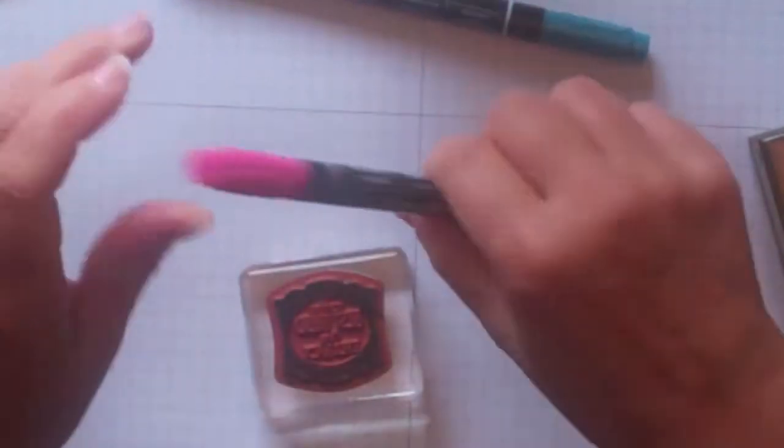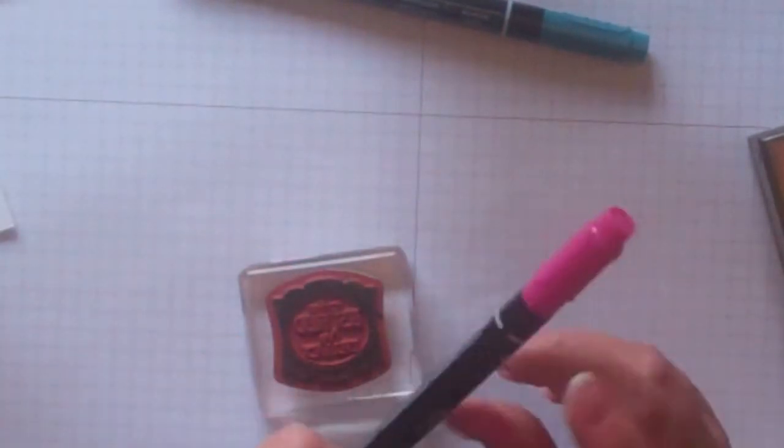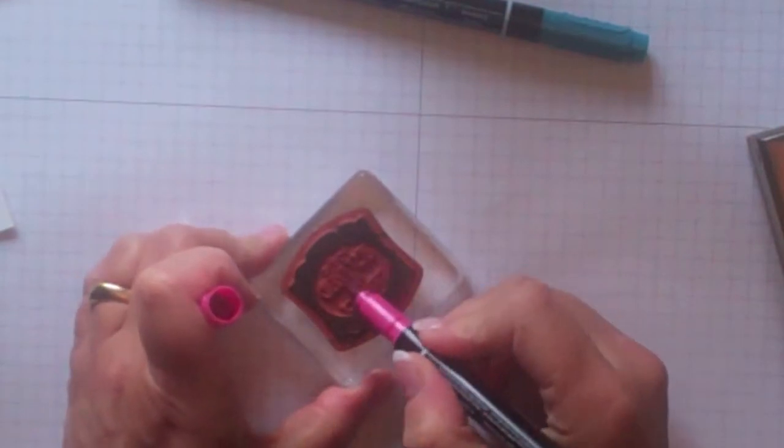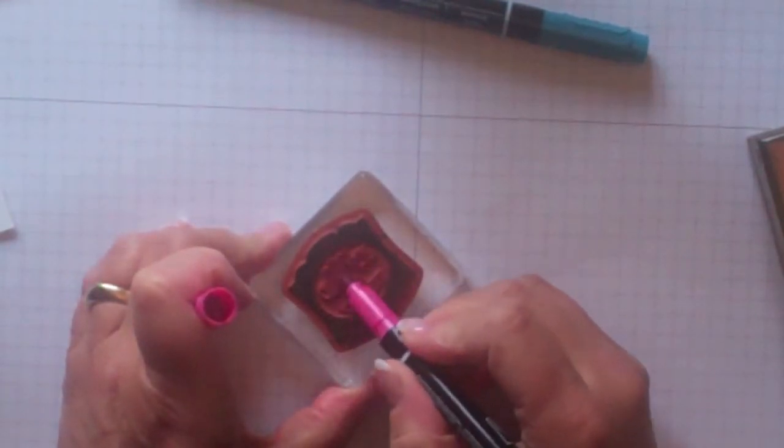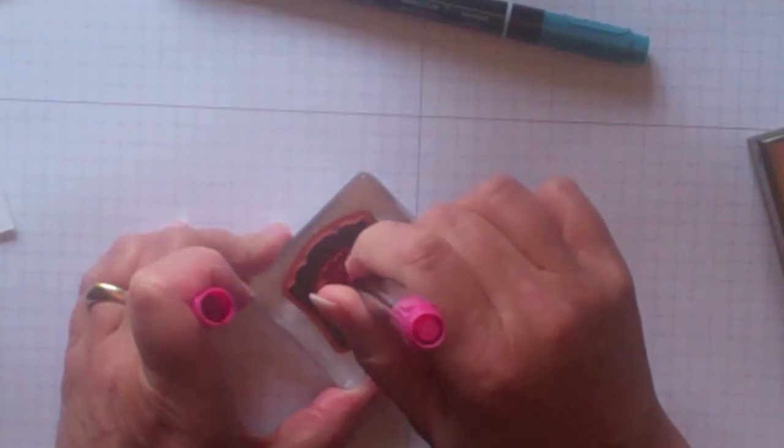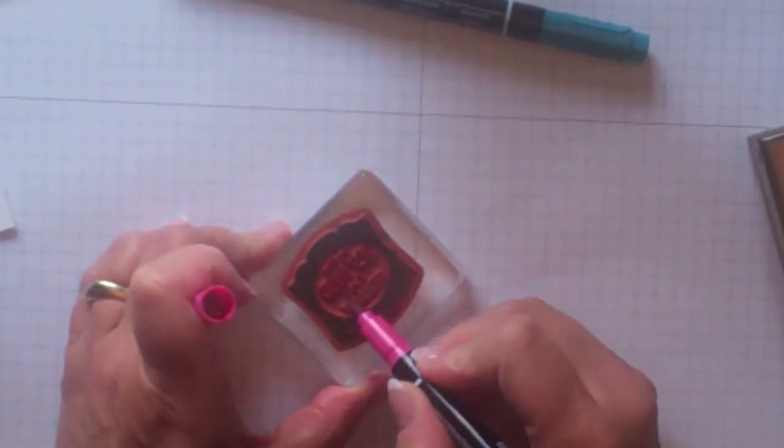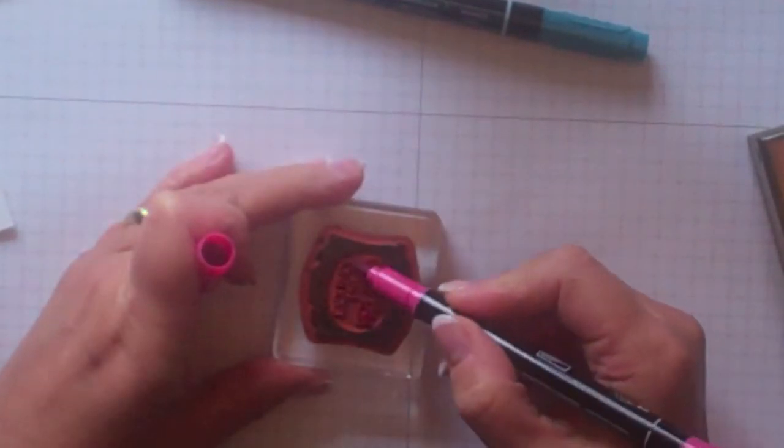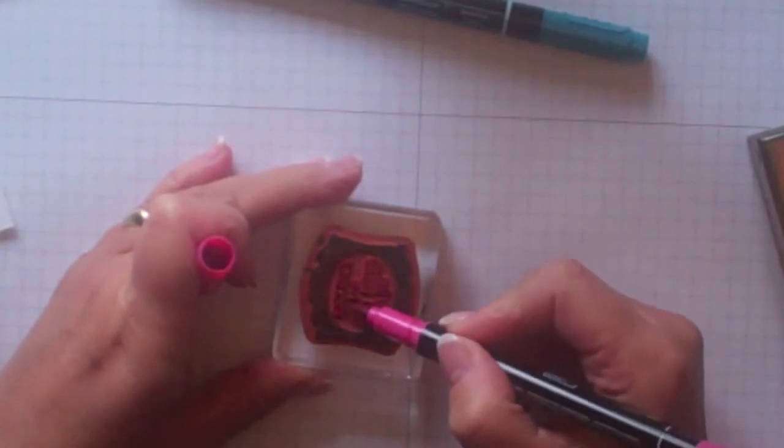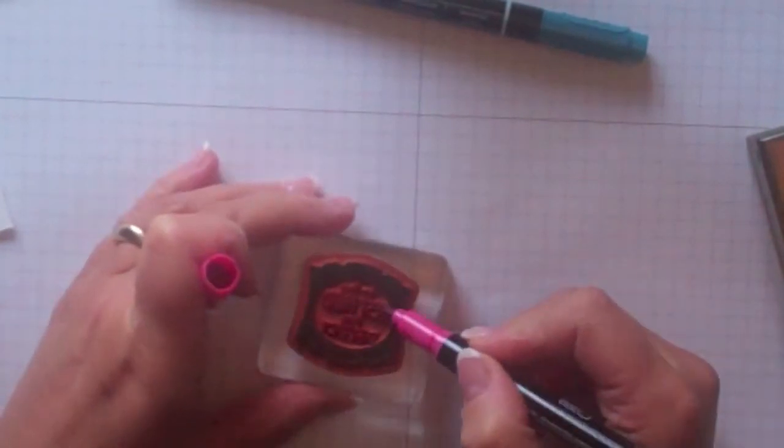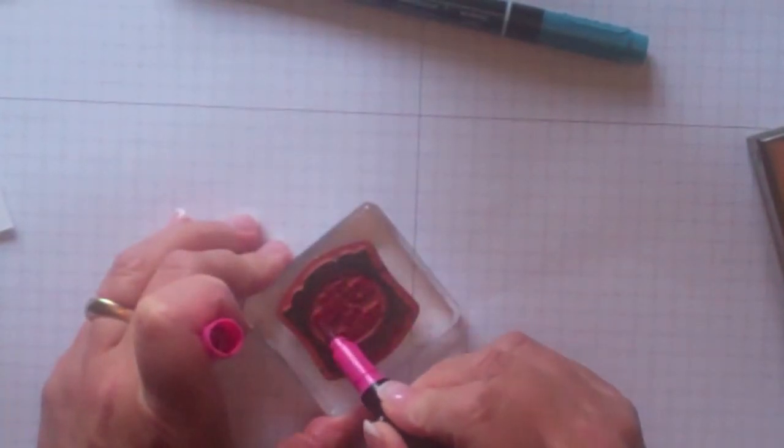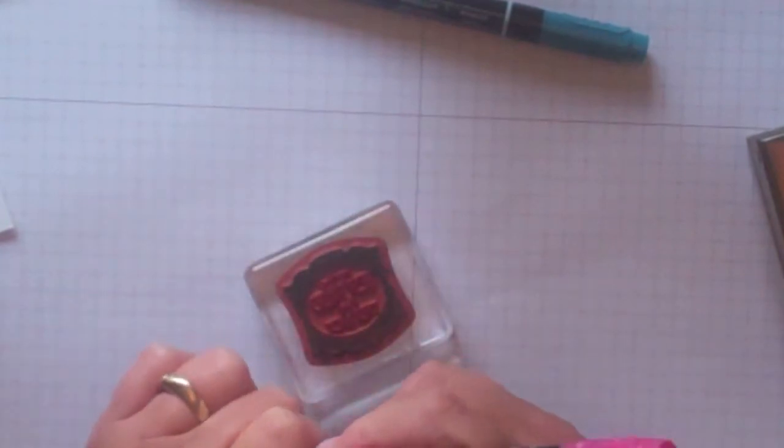Then I want to come in with my second color which is lighter and color in the inside words. You may notice when I'm coloring I'm not using the tip of my marker I'm using the side because I don't want the tip to get all damaged and can get kind of fuzzy if you try and color right on the point. Just on this side like so.